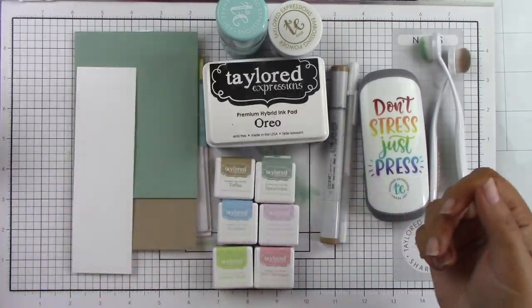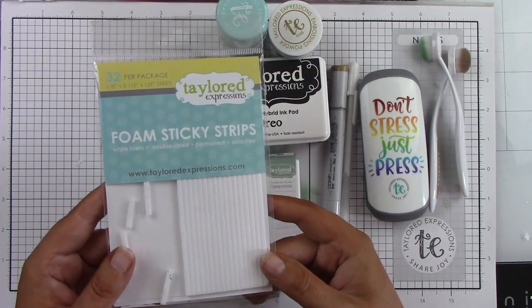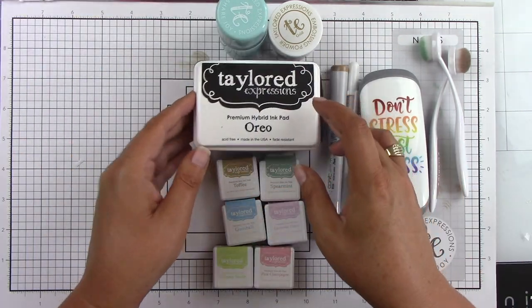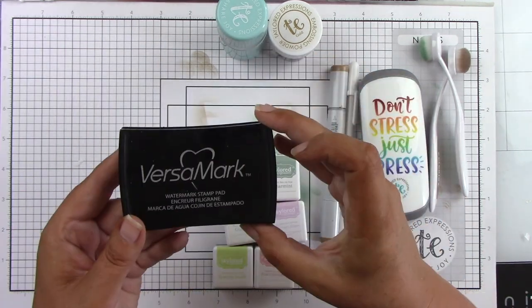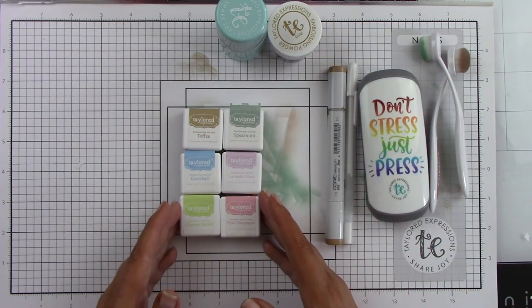I'm going to be using sugar cube, spearmint and toffee cardstock, foam sticky strips, Oreo ink and Versamark ink. Then I'll be using toffee, spearmint, gumball, lavender glaze and Granny Smith's ink.